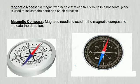Magnetic needle. A magnetized needle that can freely rotate in a horizontal plane is used to indicate the north and south direction.